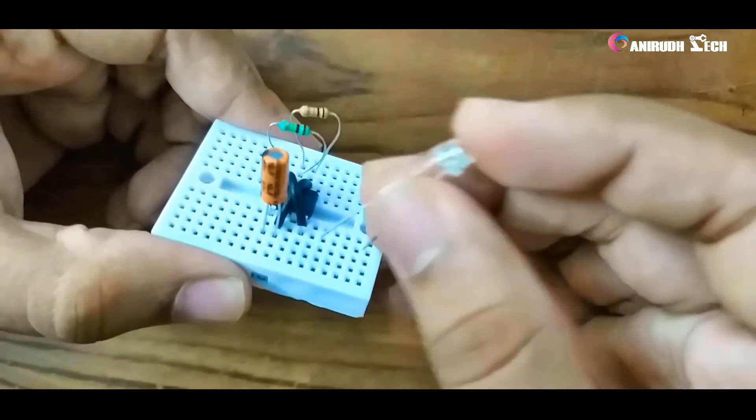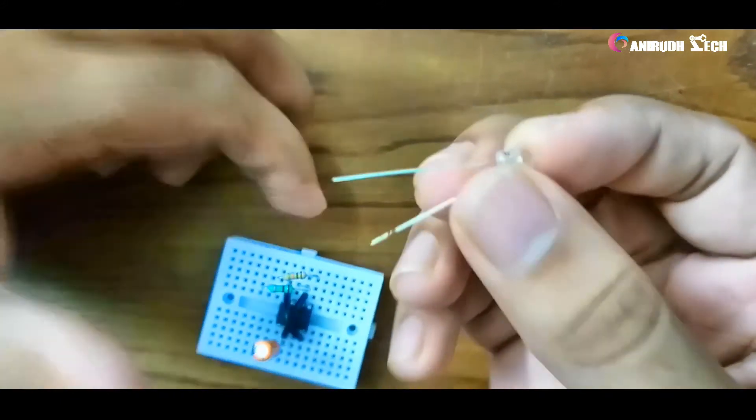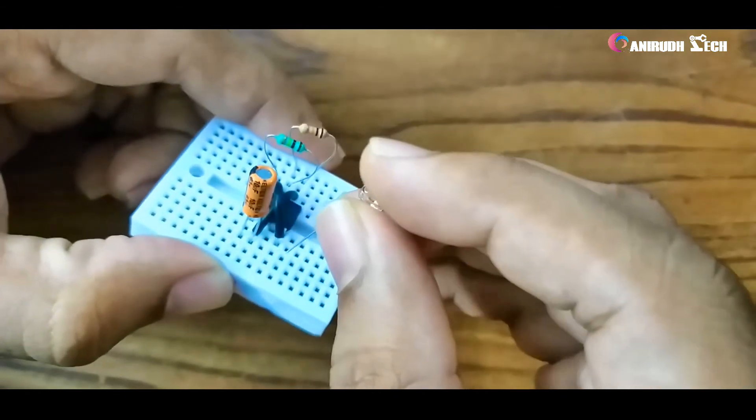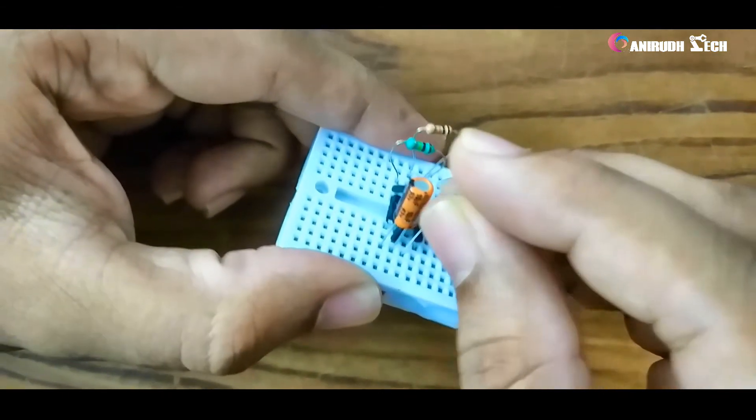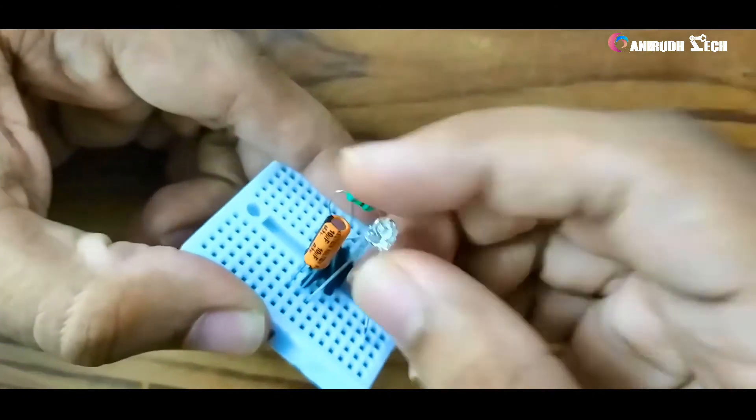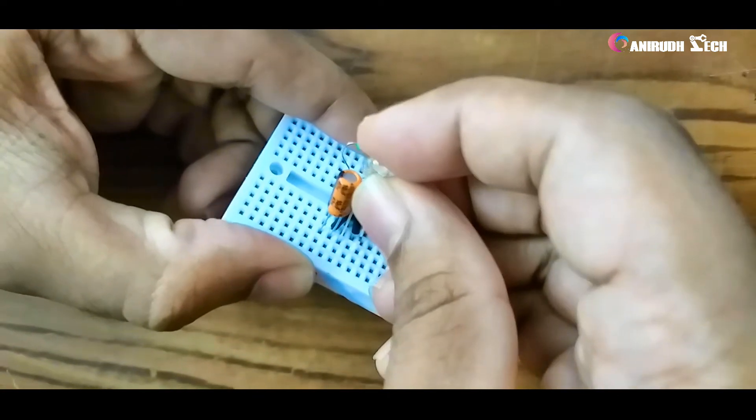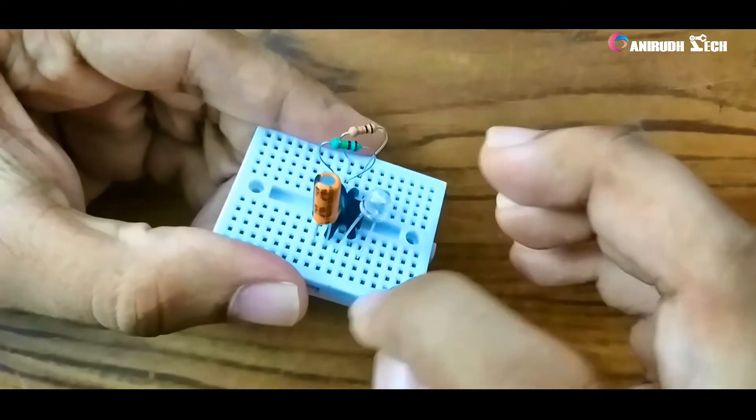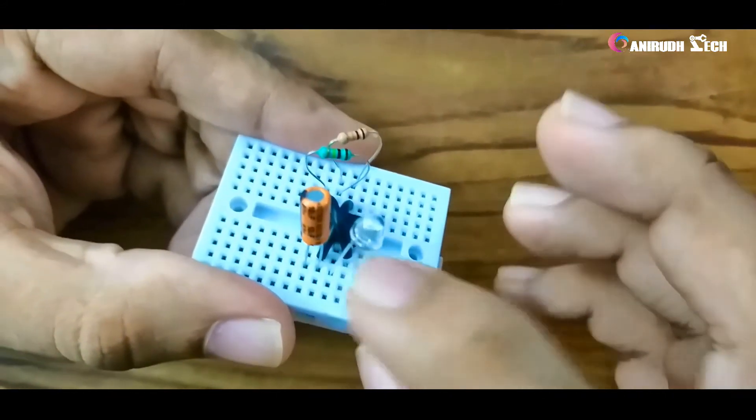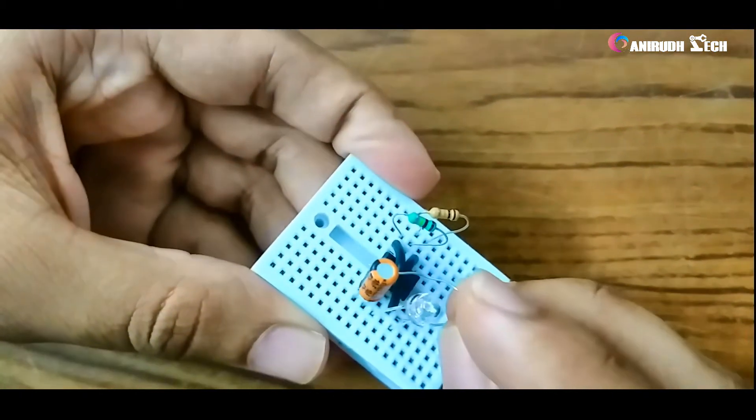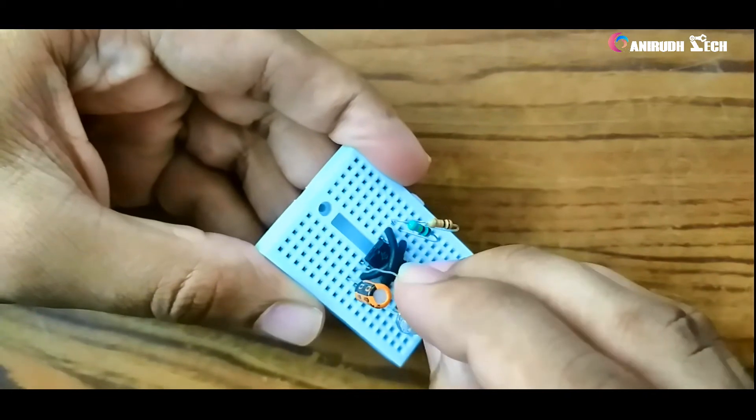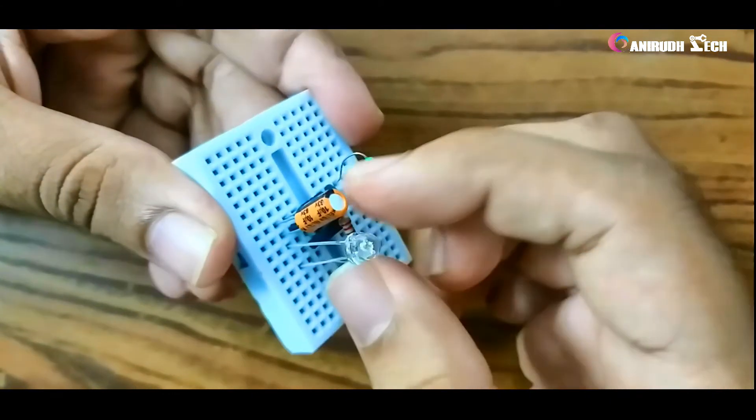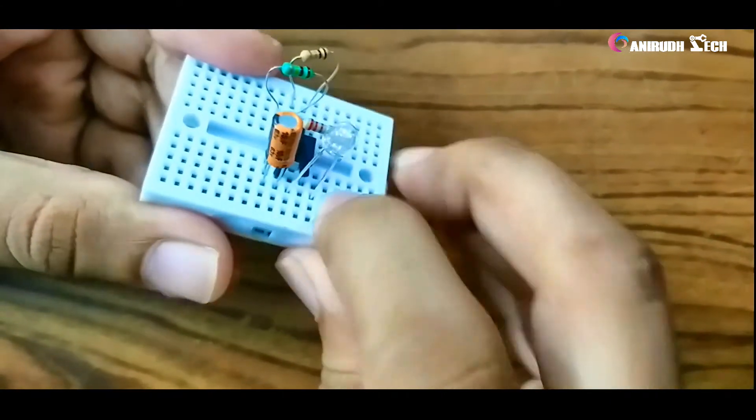The LED: long pin is positive and the other is negative. Connect the positive side to pin three of our IC. One, two, and three. So the other leg, I am giving it to ground through the 220 ohm resistor, connecting the negative pin of our LED to the first pin of the IC, which is ground.